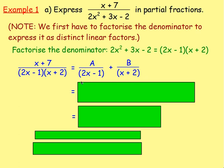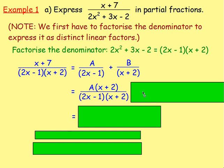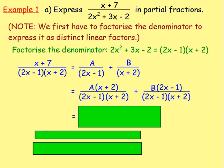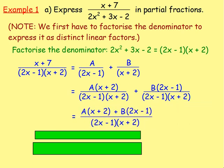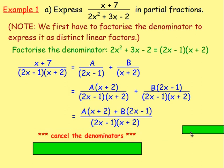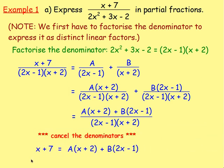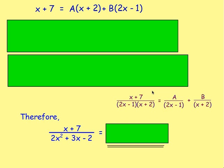A is over (2x − 1), but we're missing the (x + 2), so multiply numerator and denominator by (x + 2). B is over (x + 2), but we're missing (2x − 1), so multiply numerator and denominator by (2x − 1). Because we now have the same denominator, we can add the numerators. Since the denominators are equal on both sides, the numerators must be equal too, so: x + 7 = A(x + 2) + B(2x − 1).